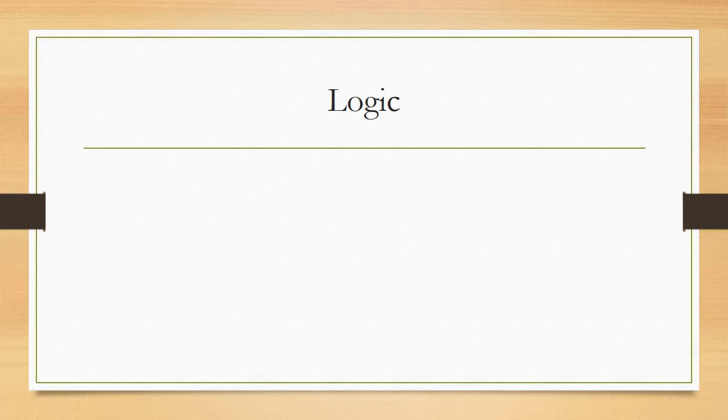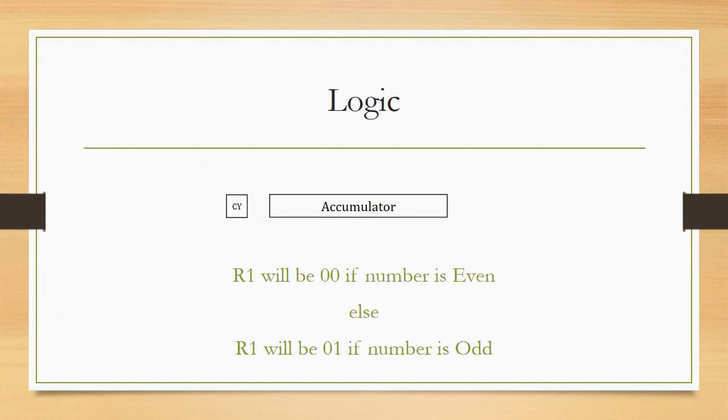For this purpose, let us consider the accumulator register and the carry flag. To store the result, let us consider the register R1. Register R1 shall hold 0 if the given number is an even number, else R1 will be holding 01 to indicate that the number under investigation is odd.